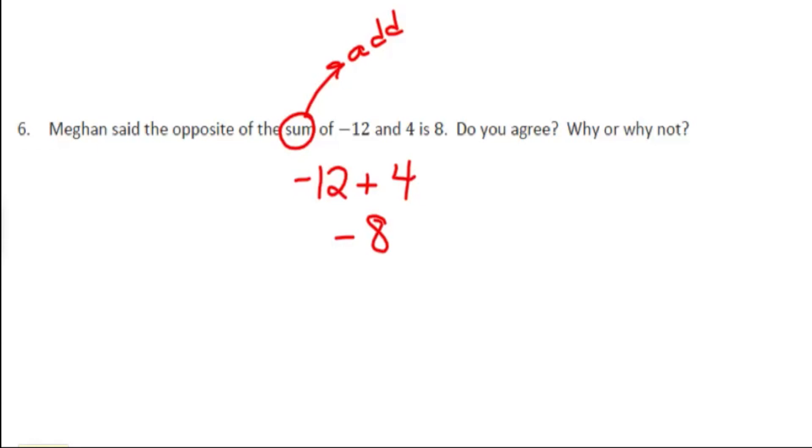But they didn't ask me for the sum of negative 12 and 4, they asked for the opposite of that sum. So since it said to find the opposite, I'm going to have to do the negation of that. So instead of having a sum of negative 8, the opposite of the sum would be 8.